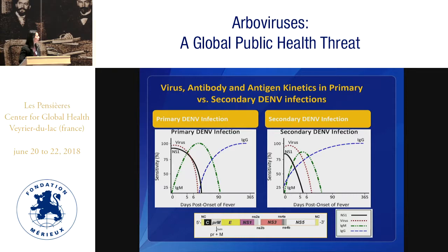Whereas in primary infections, you see IgG coming up around 9 to 10 days post-onset of fever. The other difference is that you have this IgM response that persists up to 3 months in some cases in primary infections, and you don't often see this persistence in secondary infections. Now, most of the antibody is made against the envelope protein. You have 180 envelope proteins in every viral particle, so that's really where most of the antibodies are actually produced, but they're also produced against many of the structural genes as well as all of the other non-structural gene products.